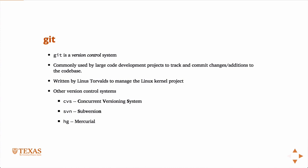Git was originally written by Linus Torvalds to manage the Linux kernel project. There are other version control systems like CVS and SVN — these are older systems, and I can't imagine starting a new project using one of these today. There is another one called Mercurial, which uses the command HG, and it's very similar to Git in many respects, but for the most part everyone uses Git as a first-pass version control system.